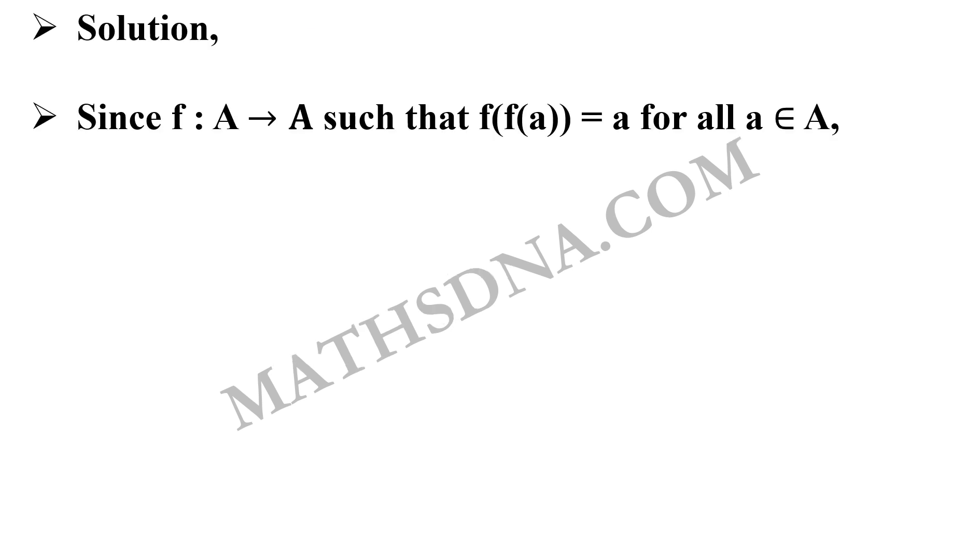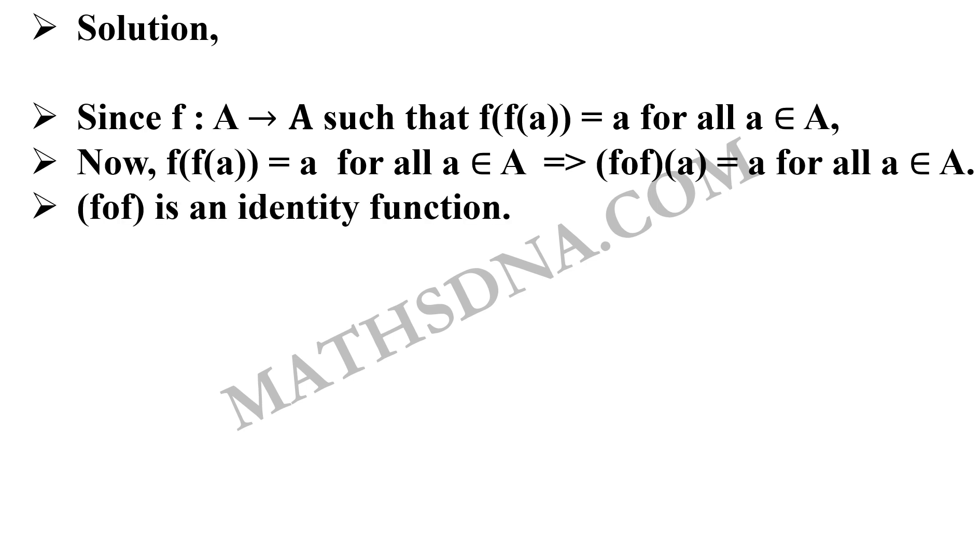Now let us go to the solution. As per the given question, the function is f from A to A such that f(f(a)) equals a for all a belongs to A. Now we can easily write this as fof of a equals a for all a belongs to A, which is nothing but the identity function. fof, that is composition of f over f, is an identity function.